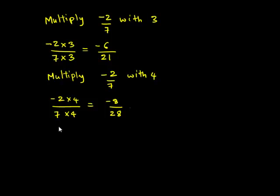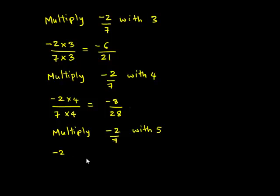And the next equivalent number can be obtained by multiplying negative 2 upon 7 with 5. This gives: when multiplied by 5 in the numerator and in the denominator, we get negative 2 times 5 is negative 10 upon 7 times 5 is 35.